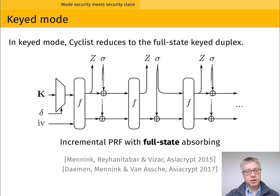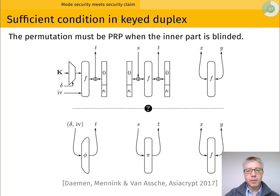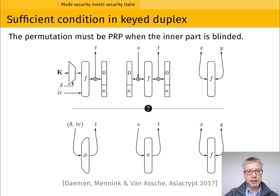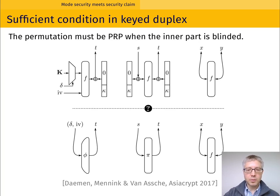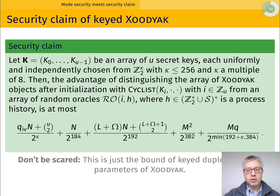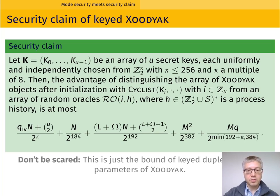The analysis of this construction was done in these two papers. The assumption we need to make on the permutation is not that it behaves like an ideal permutation — a sufficient condition is that it behaves as a PRP, a pseudo-random permutation, when at the input and output, the last C bits are blinded with some secret value, making it indistinguishable from a random permutation. A similar condition applies at initialization when the secret key is absorbed. For Zodiac, we simply wrote down the security bound for the full state key duplex construction and adapted it to the parameters of Zodiac.